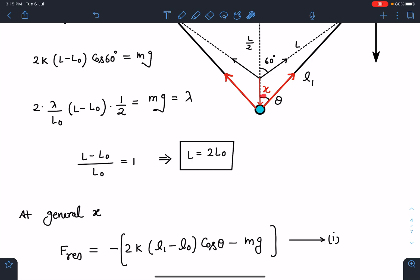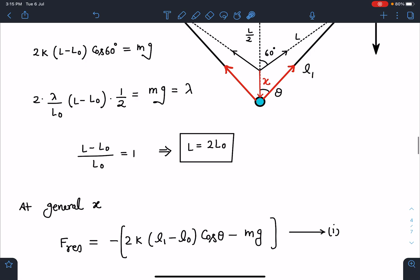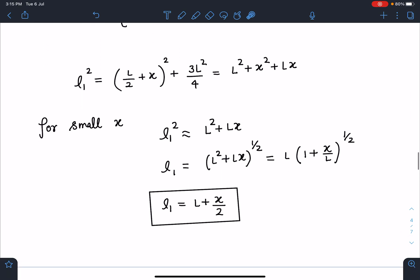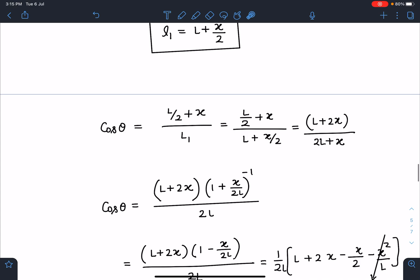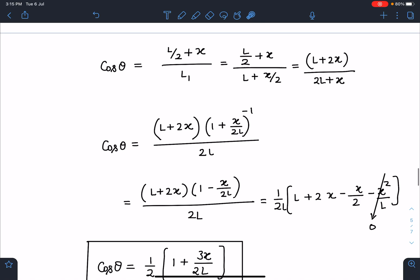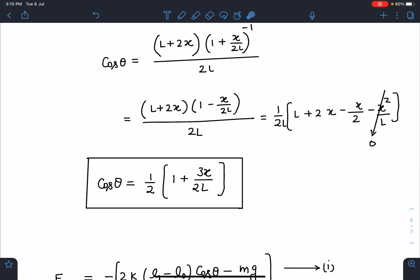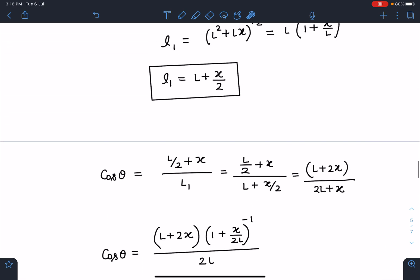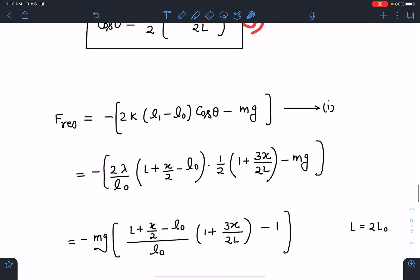When I try to solve by using taking this angle approximately as θ, I was not getting the answer what they are asking us to prove, so that's the reason I'm going ahead with more approximation here. Cos θ is L/2 + x divided by L₁. Now when I substitute the value of L₁ obtained here and simplify, finally you can see I'm getting, I'm not explaining the calculation part here, the approximation part you can check. I'm going to get cos θ = ½(1 + 3x/2L).